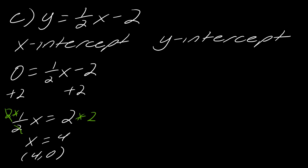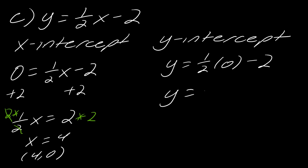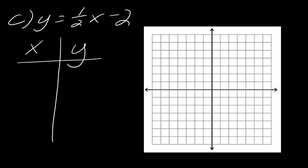For the y-intercept, I plug in zero for x — this makes it very simple, everything drops out and it's just y equals negative 2. So the y-intercept is (0, negative 2). Now I have (4, 0) and (0, negative 2), and I need to find that third point.